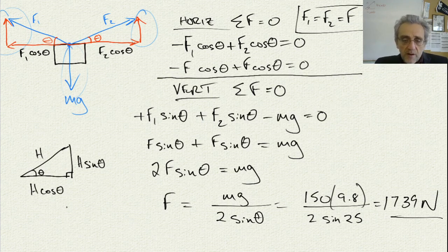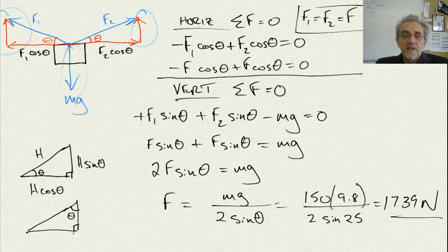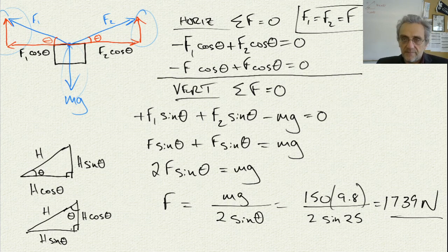Also, be aware that sometimes, instead of that angle, sometimes you can be given this angle. And now it's flipped. So, if that's the hypotenuse, now, if you get theta up here, now, this becomes H cosine theta and this becomes H sine theta. Sine is always the opposite side and cosine's always the adjacent side.